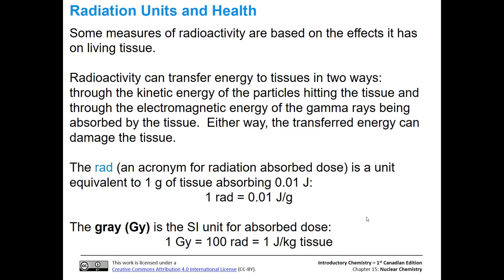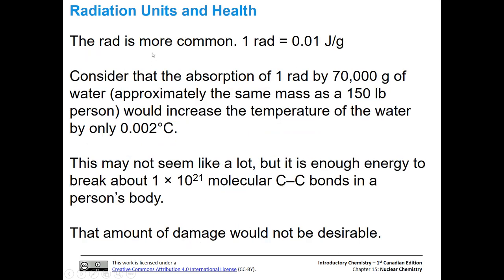The first unit for this type of measure is the RAD, an acronym for Radiation Absorbed Dose. It's equivalent to one gram of tissue absorbing 0.01 joules — so one RAD equals 0.01 joules per gram. The Gray is the SI unit for absorbed dose, equal to 100 RAD or one joule per kilogram of tissue. The RAD is more common.